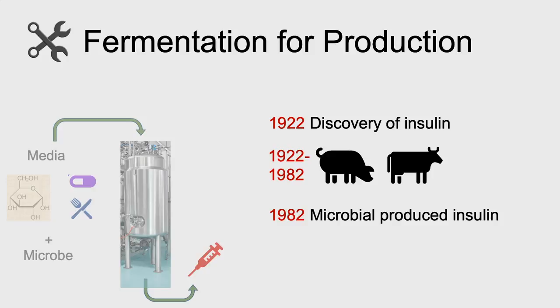In 1982, the first microbial-produced insulin came to market, and it was actually human insulin. So you're taking now media and a microbe and you're making a better, more pure product for less of a cost. That concept allowed the supply to meet the demand and for patients to have better outcomes. This is now a $7 billion industry making insulin.